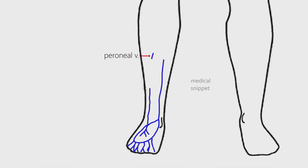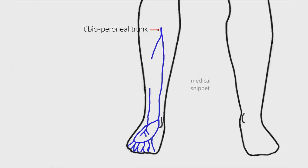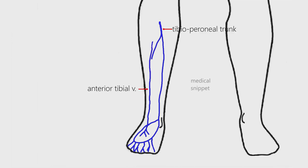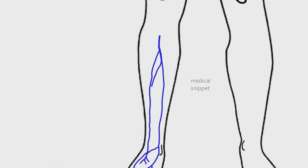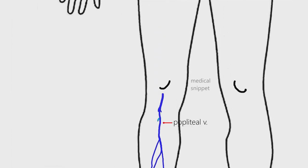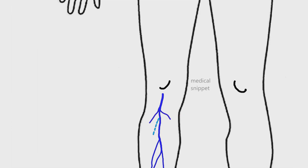The peroneal vein originates in the distal third of the leg and ascends to unite with the posterior tibial vein to form the tibioperoneal trunk. The anterior tibial vein joins the tibioperoneal trunk to form the popliteal vein. The main tributaries of the popliteal vein are the small saphenous vein and gastrocnemius veins. The popliteal vein, as it ascends through the hiatus magnus, becomes the superficial femoral vein.